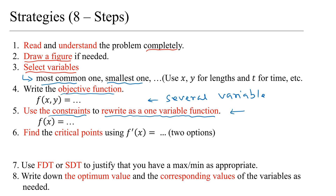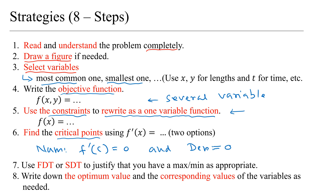You must rewrite the function as a single-variable function using the constraints — this will be very clear once we do the problems. After that, you take the derivative and find the critical points. Remember, there are two types: from the numerator, you set it equal to zero to find where the derivative is zero; from the denominator, if there is a non-constant denominator, setting it equal to zero gives you sharp corners where the derivative does not exist.